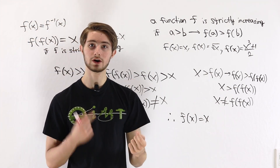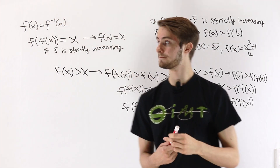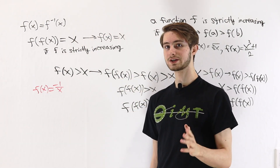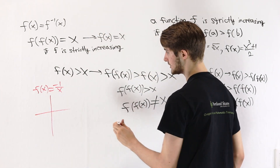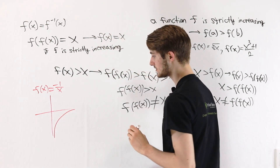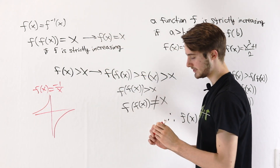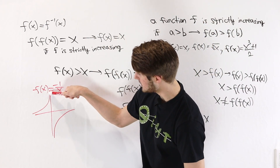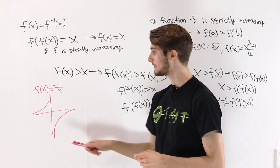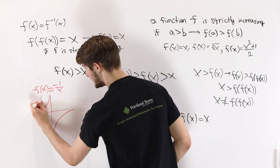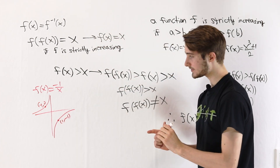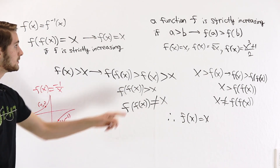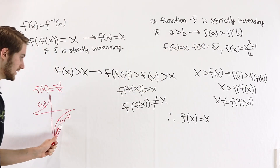Let's look at a few examples of functions that are and are not strictly increasing. First, the function f(x) = -1/x. This function is not strictly increasing over its domain. To see why, we'll look at a graph. Negative 1/x is going to be increasing for x > 0 and increasing for x < 0. But if we look at what happens at x = 0, the function goes from very large positive values to very large negative values. That means if we take, for example, the point (-1, 1) and the point (1, -1), these do not satisfy the condition for a function to be strictly increasing. We know that 1 is greater than -1, and yet the bigger input gets mapped to a smaller output.